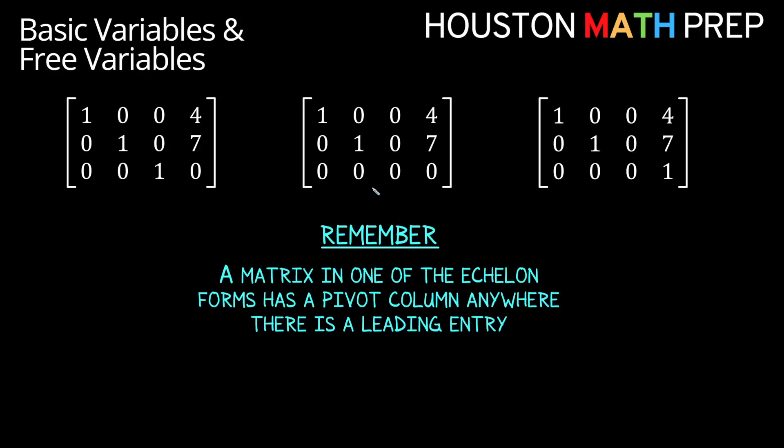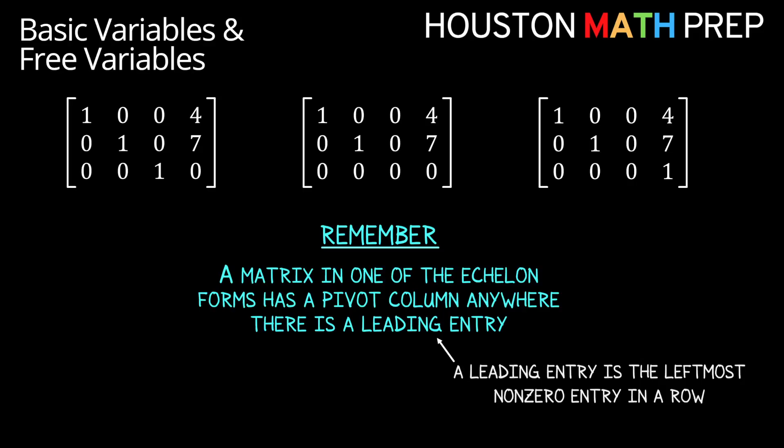Hopefully you're familiar with the idea that a matrix in echelon form has a pivot column anywhere there's a leading entry, and we want to keep in mind that leading entries are the leftmost non-zero entry in a row of a matrix. We've got a few examples of matrices in echelon form here — in fact, they're all in reduced echelon form.